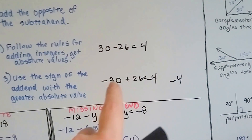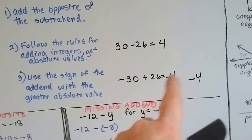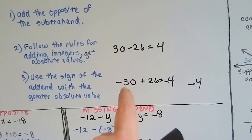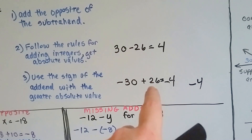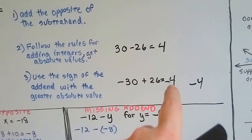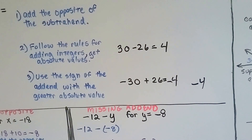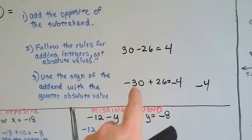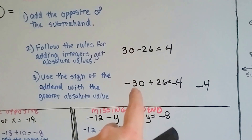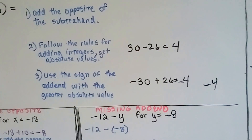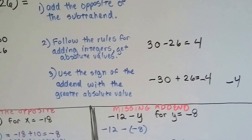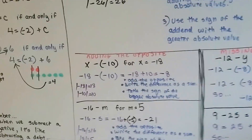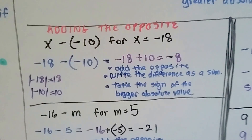When we have negative 30 and we add 26 to it, we get negative 4. If we had a 30-foot hole and we put 26 feet of dirt into it, we'd still have a 4-foot hole. If you owed Emma $30 and you paid her $26, you'd still owe her $4. Alright, so here's adding the opposite again.